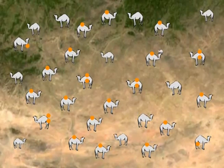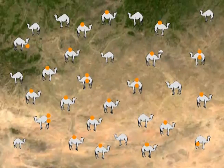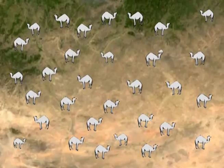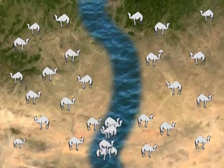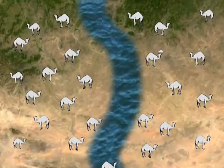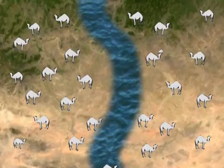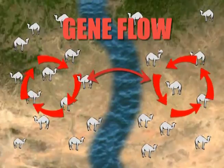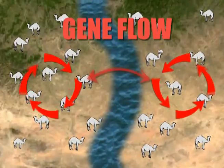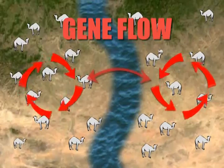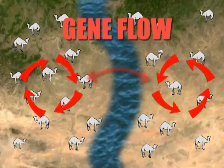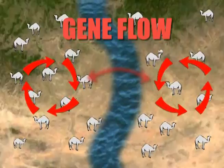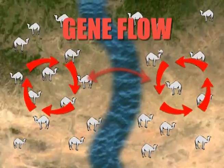How might this single population give rise to multiple different species? Let's reset the mutations and suppose that a physical barrier breaks the population in two. We have chosen a river for this animation, though the barrier doesn't have to necessarily be a physical divider — just anything that can limit gene flow, that is, movement of alleles between the two groups. It should also be pointed out that a barrier like this doesn't have to completely abolish gene flow; it only has to reduce gene flow between the groups relative to within them.